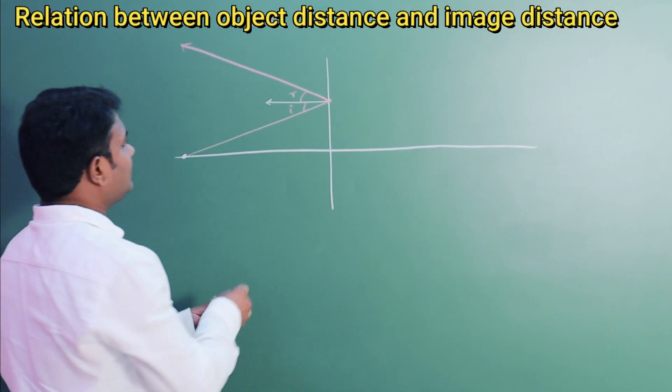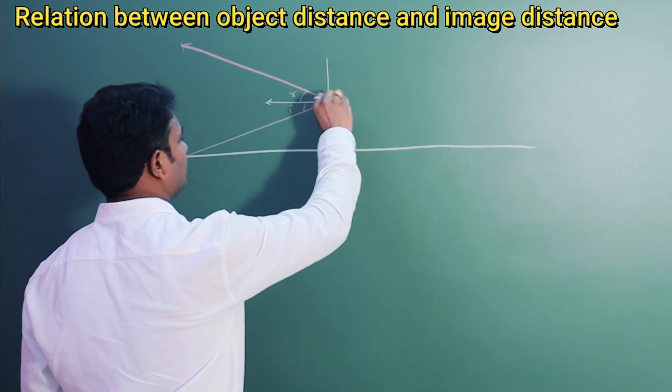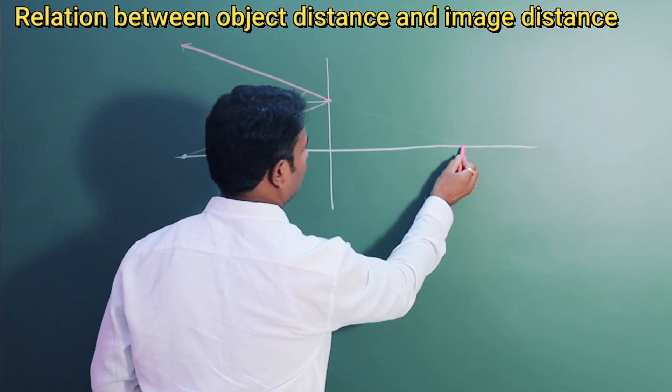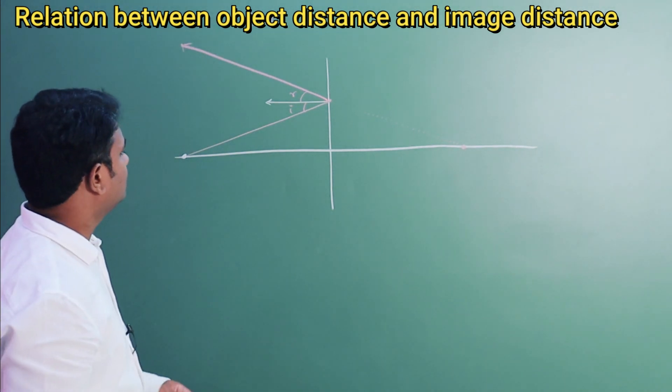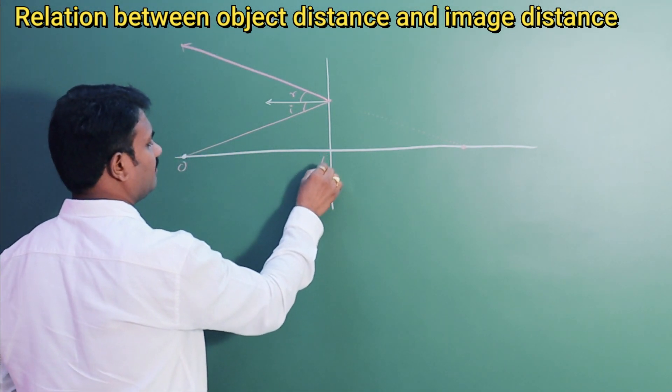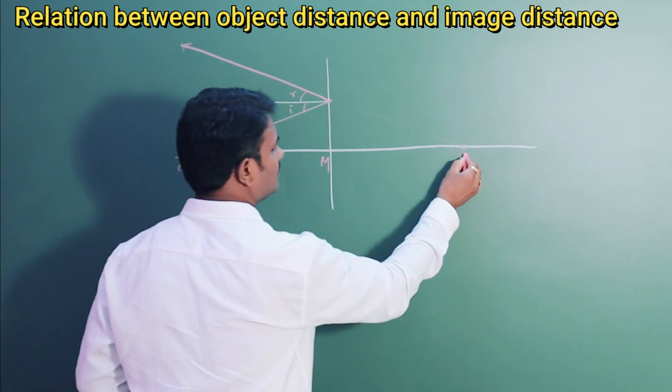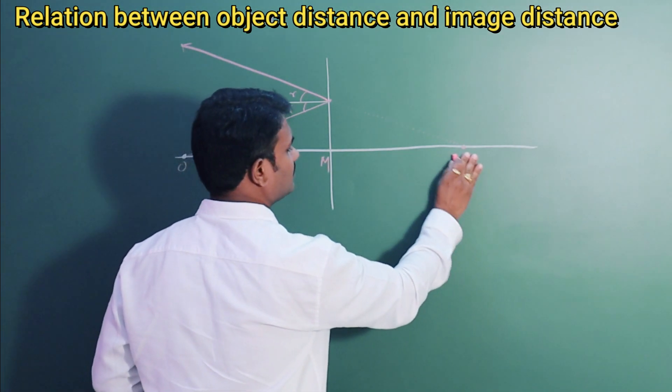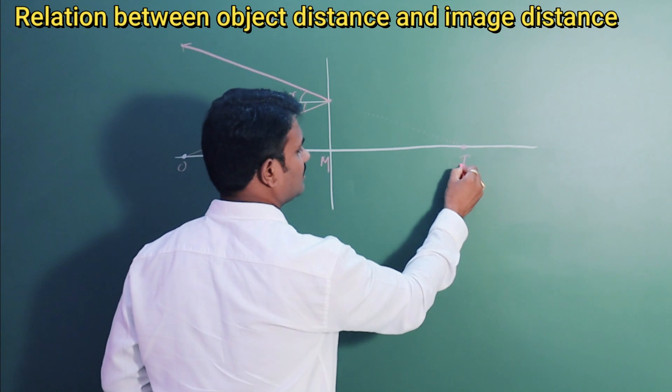Now, if I extend this line, what happens? It falls here. If this is the object, let us see O. This is some mirror M. This is image I.